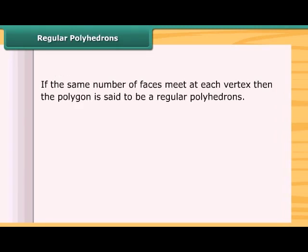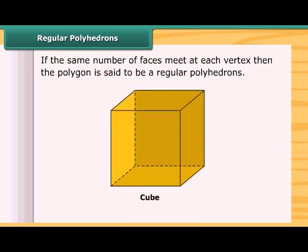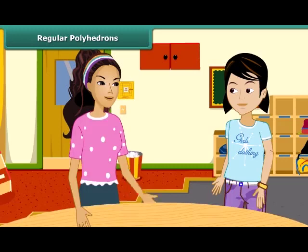If the same number of faces meet at each vertex, then the polygon is said to be a regular polyhedron. A cube is a regular polygon because here, three faces meet at each vertex.